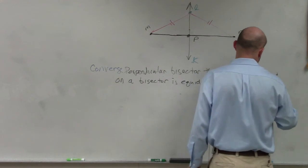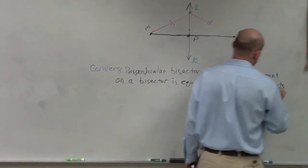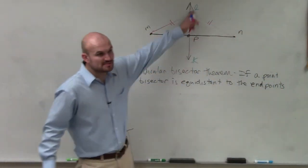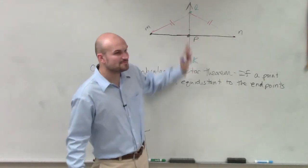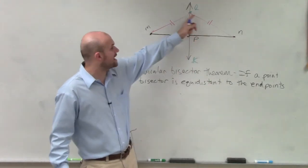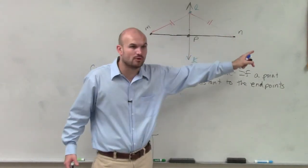so if this line is bisecting it right now, right? We don't know it's 90 degrees. If this line is bisecting, if there is a point that is now equidistant to these endpoints,